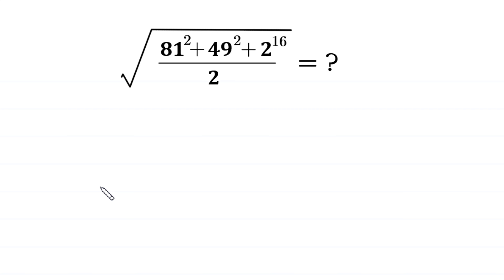Hello. Welcome to how to solve this very nice square root math simplification problem. Square root of 81 squared plus 49 squared plus 2 to the power 16, divided by 2.